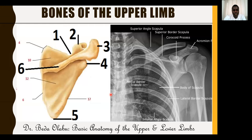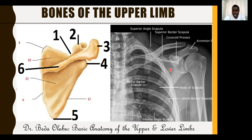Now we talk about the bones of the upper limb. We have the pectoral girdle, consisting of the scapula and the clavicle. The scapula, also called the shoulder blade, has the acromial process, spinous process, glenoid, coracoid process, scapular notch, superior angle, and inferior angle.